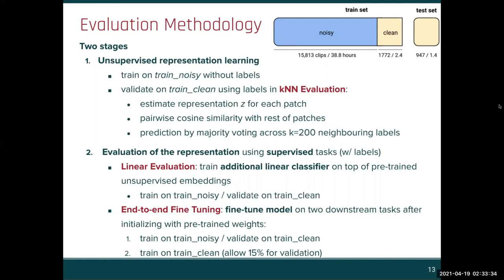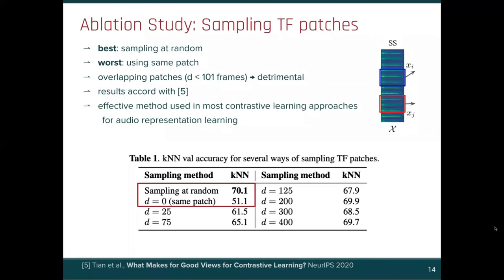The two downstream tasks we use are those enabled by the proposed dataset: fine-tuning on a larger set of noisy labels, and fine-tuning on a smaller set of clean labels. Both are relevant scenarios for sound event research.